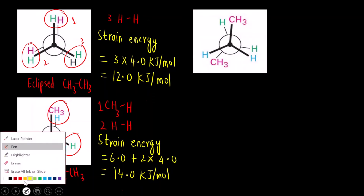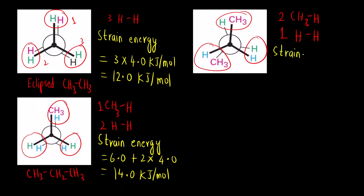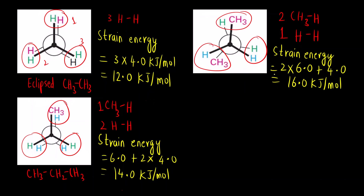Now let us look at this molecule — butane (CH3–CH2–CH2–CH3) in an eclipsed conformation. There are two CH3–H interactions and one H–H eclipsing interaction. Total strain energy = (2 × 6) + 4 = 12 + 4 = 16 kJ/mol. So the total strain energy in this eclipsed conformation of butane is 16 kJ/mol.